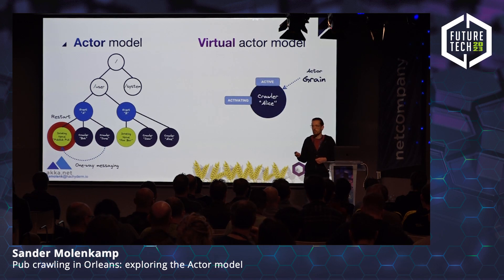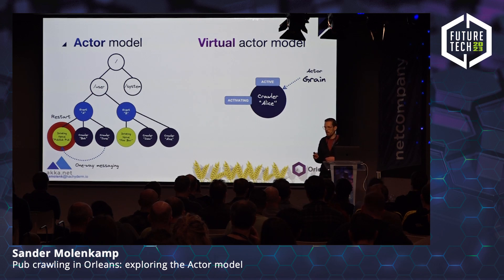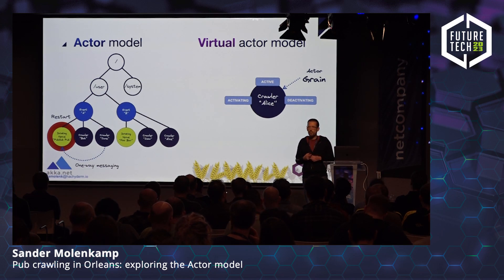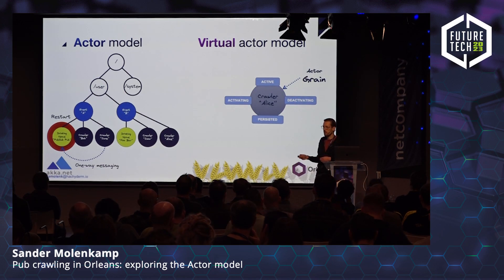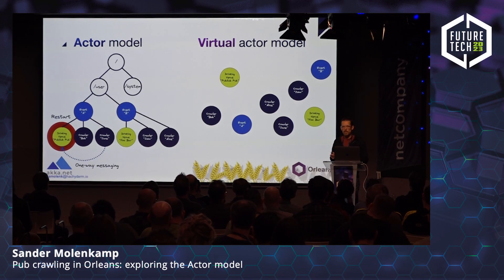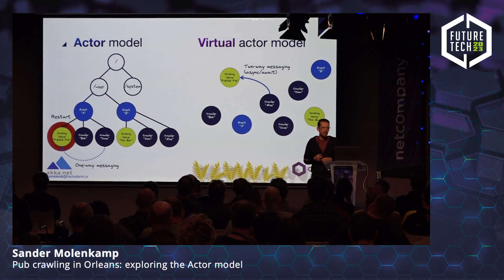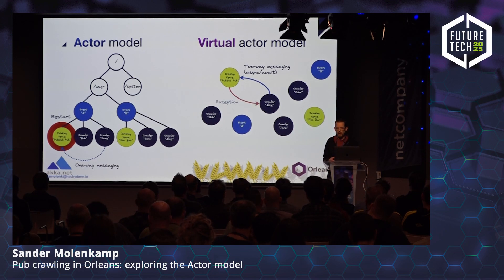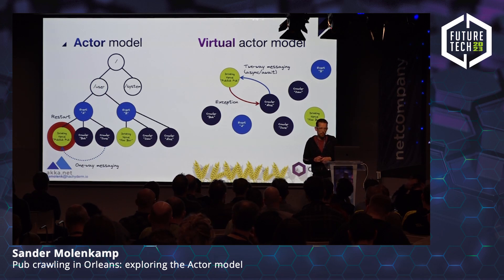Once activated, the grain can handle your request and do some work. Then if no more requests come in, after a while a garbage collector will deactivate your grain to save server resources. If you have state persisted inside that grain, it will be safely persisted so that the next time a call comes in, the grain reactivates, state is loaded, and you can continue as if nothing has happened. Grains in Orleans typically use two-way messaging with the familiar async/await syntax from .NET. So if an error occurs in the drinking venue grain, it can simply send back an exception which you catch in your crawler grain — and that even works across server boundaries.